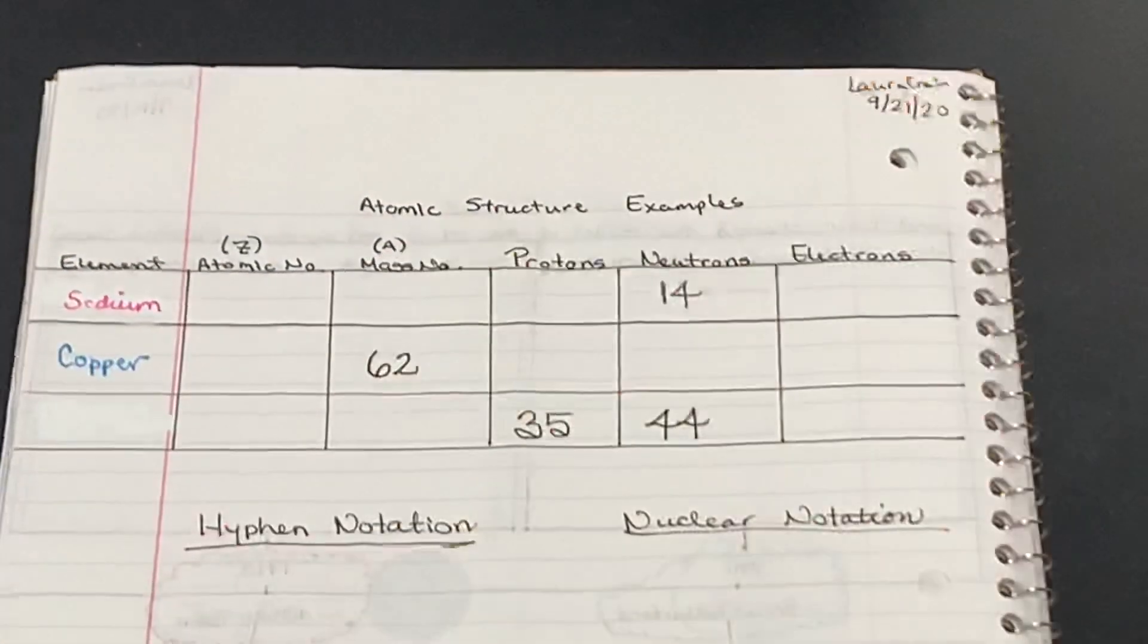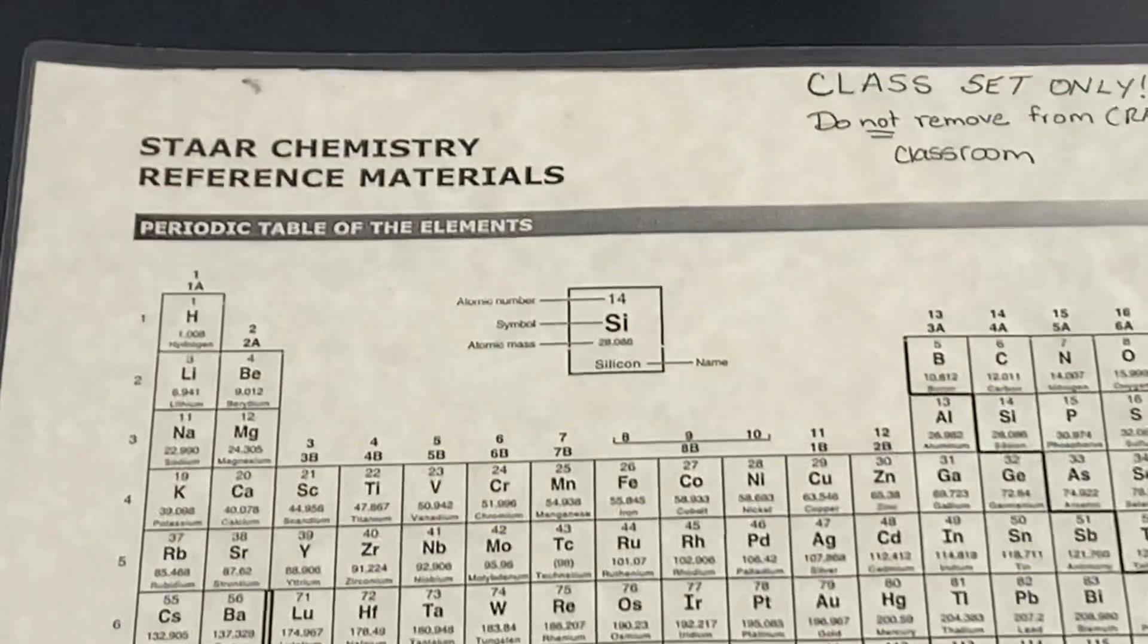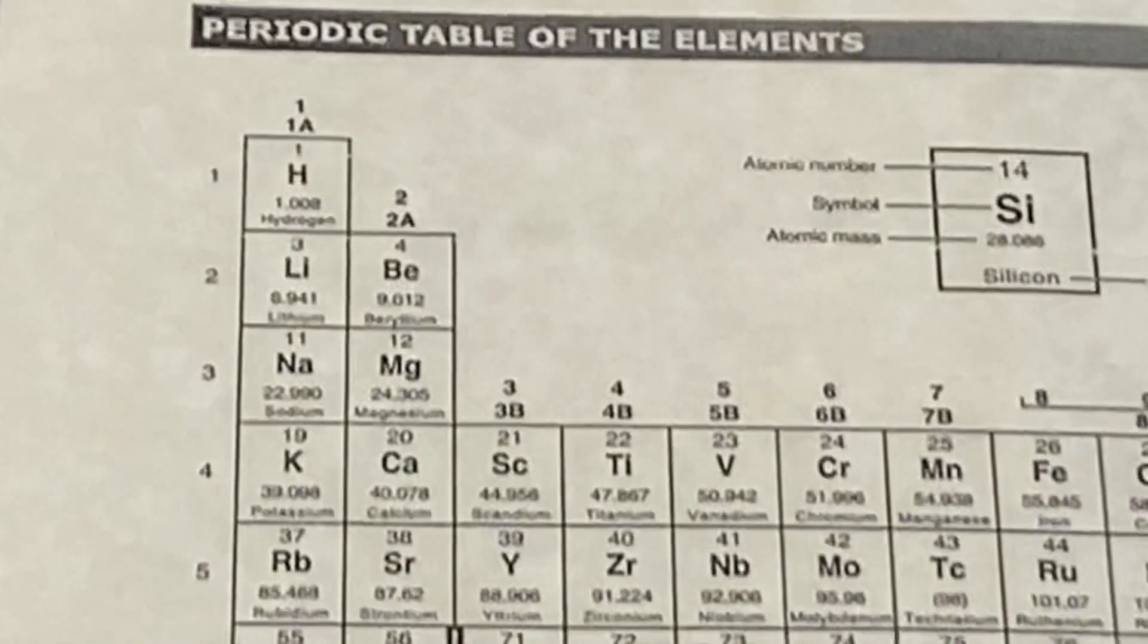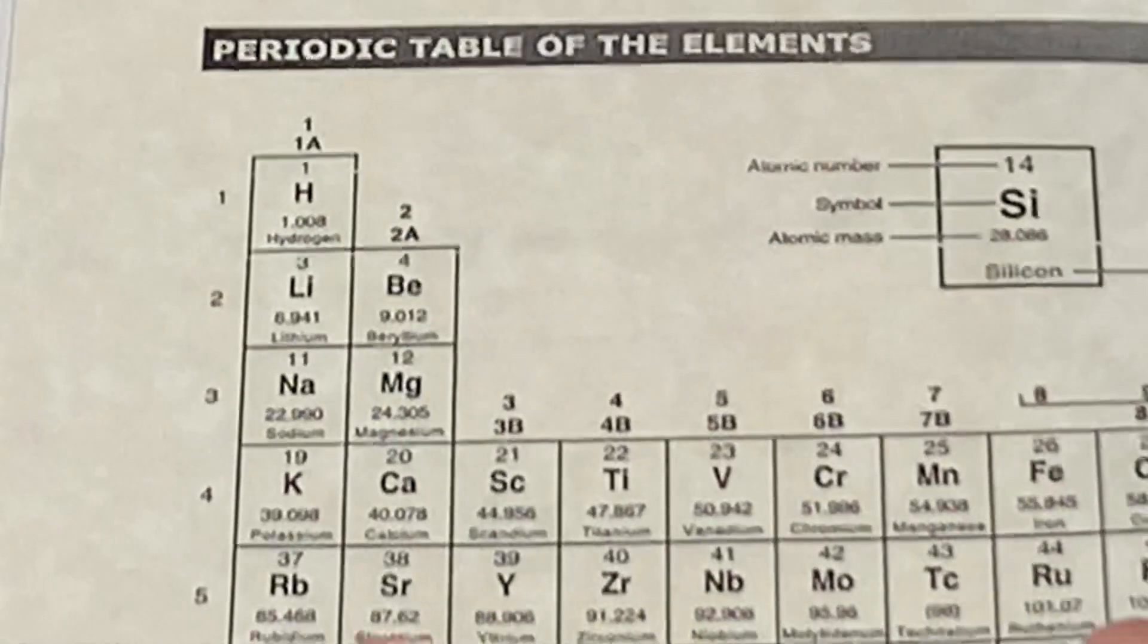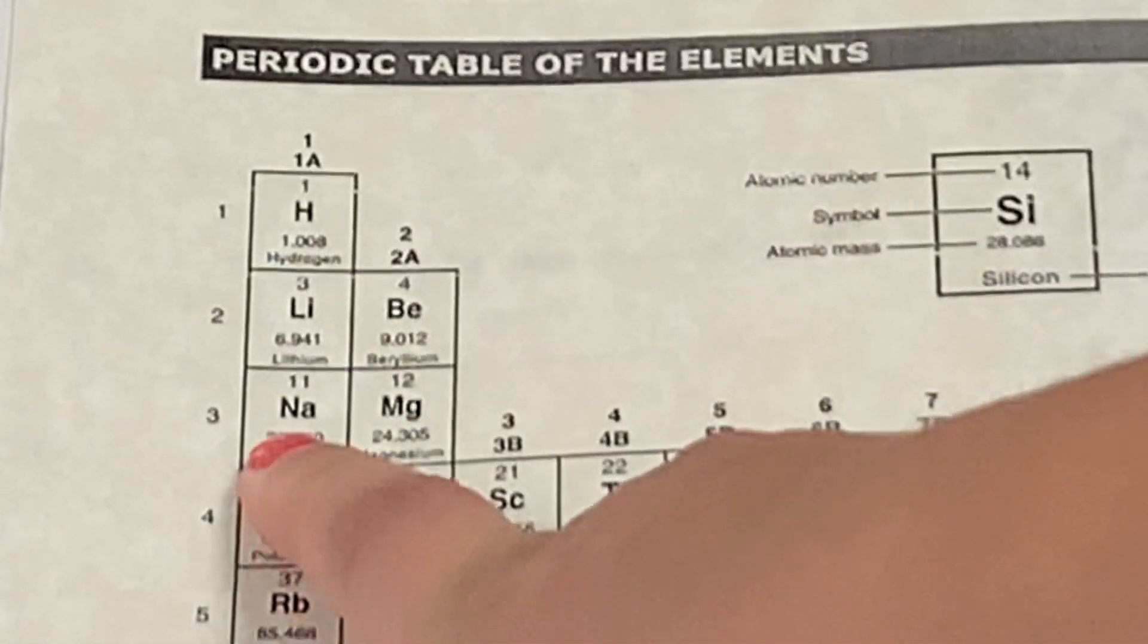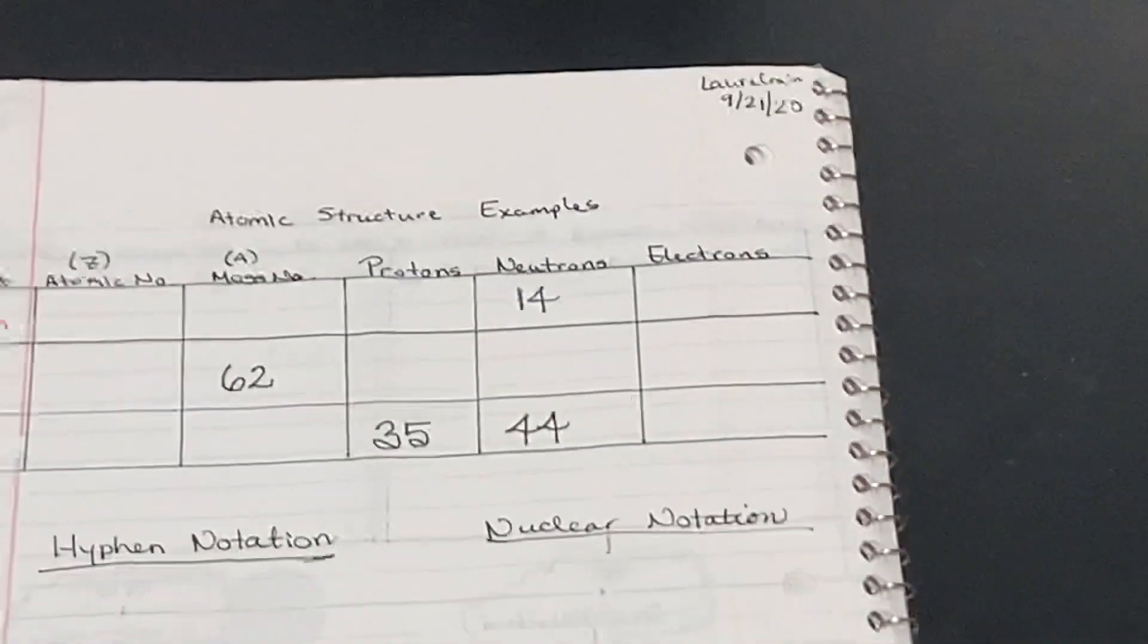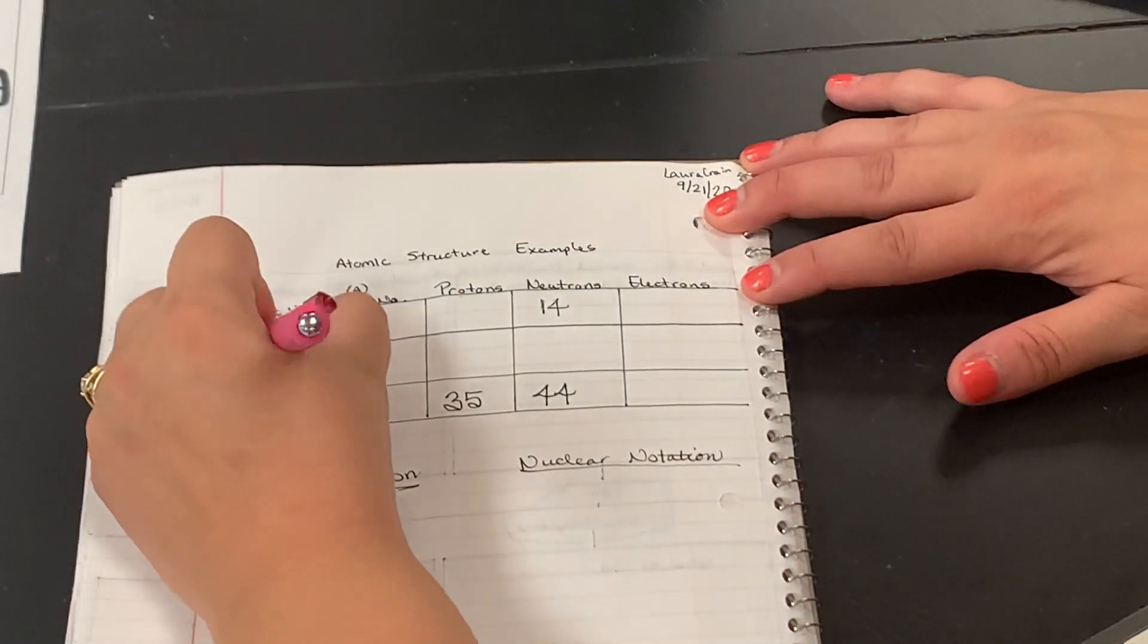We've got sodium. So let's start by finding sodium on our periodic table. Sodium is a trickster because its symbol is nothing to do with its name. Sodium is N-A. So looking at my periodic table, symbol for sodium is N-A. Atomic number is 11, so let's put that in our chart. Atomic number is 11.